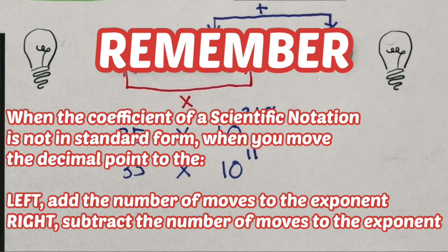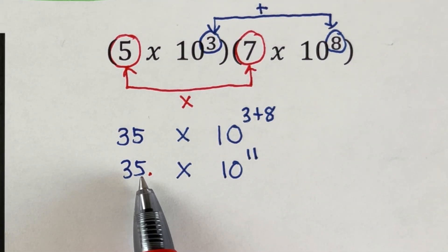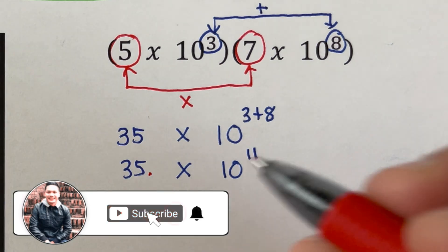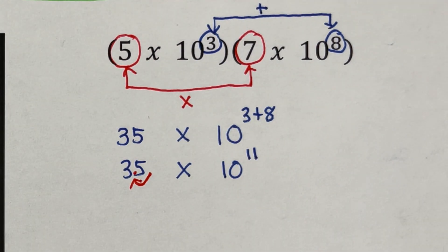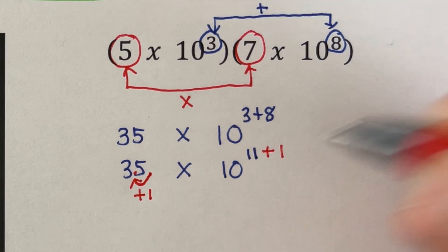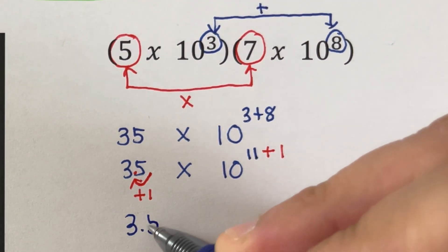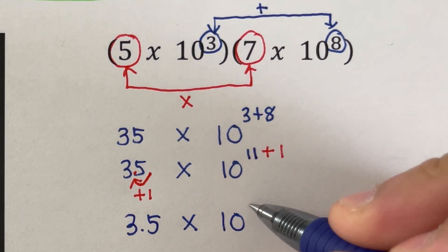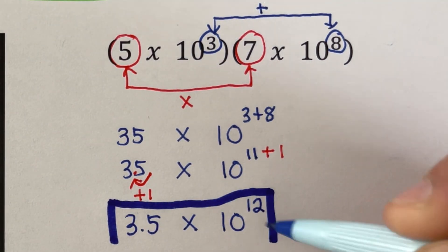In this case, since 35 is bigger than 9.9999, we move the decimal point to the left one time, making it 3.5. Since we moved one place to the left, we add 1 to the exponent: 11 plus 1 is 12. So the final answer is 3.5 times 10 to the power 12. That is the product of these two scientific notations.